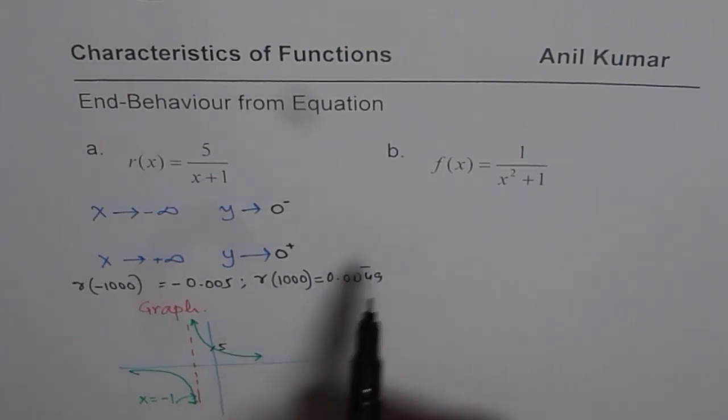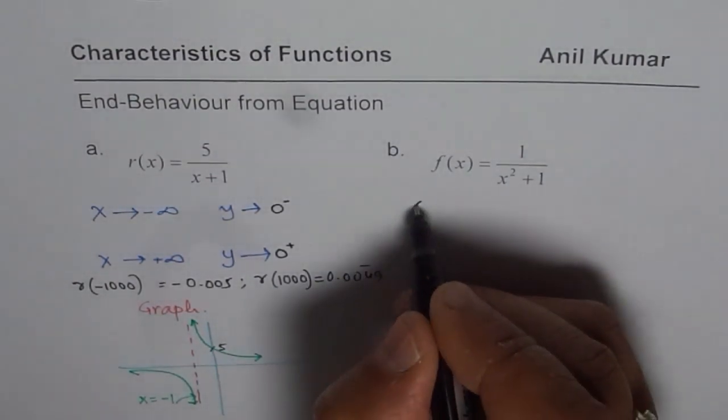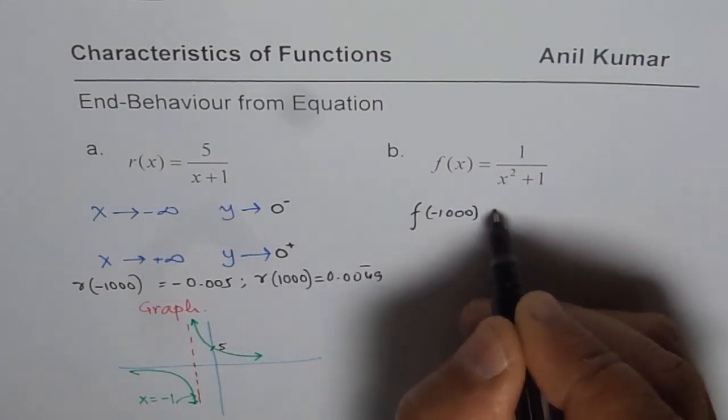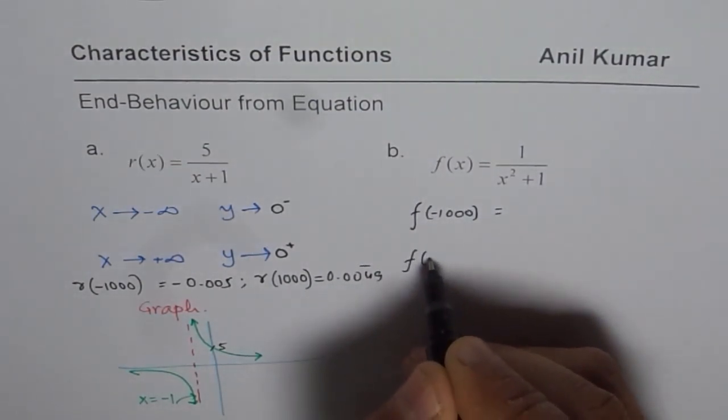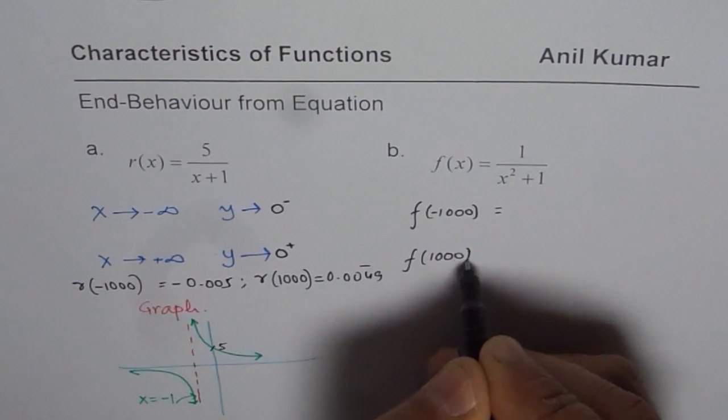So we will adopt this method to answer the second question. So let's calculate what is f of minus 1,000 and what is f of plus 1,000 for the given function.